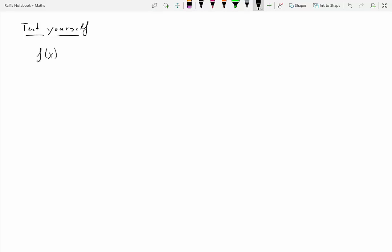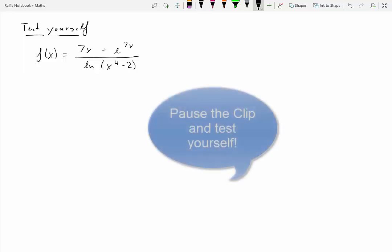Now I want you to test yourself. Here is a function f of x equals 7x plus e to the 7x. So 7x plus e to the 7x divided by ln of x to the 4 minus 2. And so now you pause the clip and test yourself.